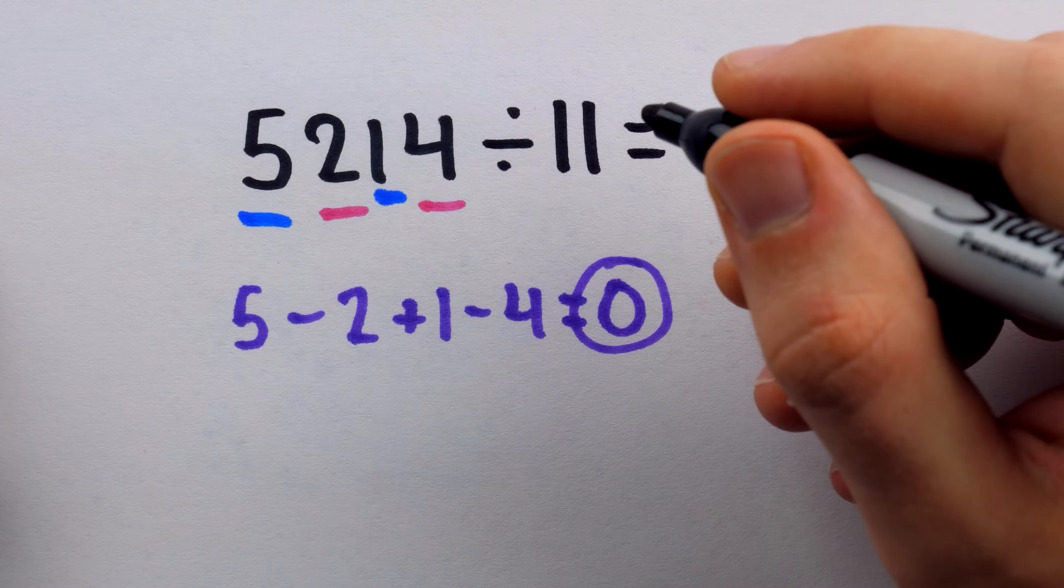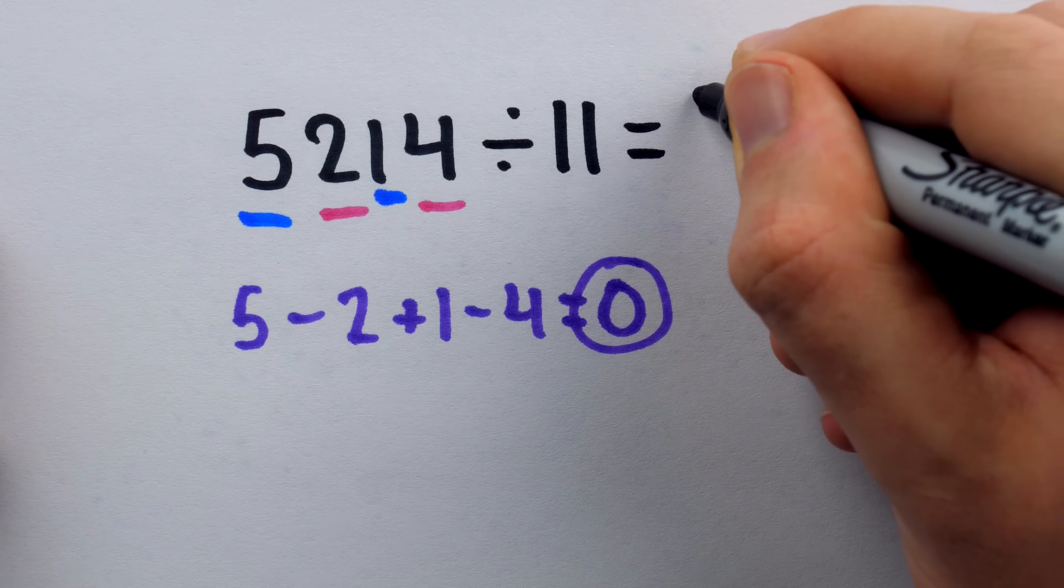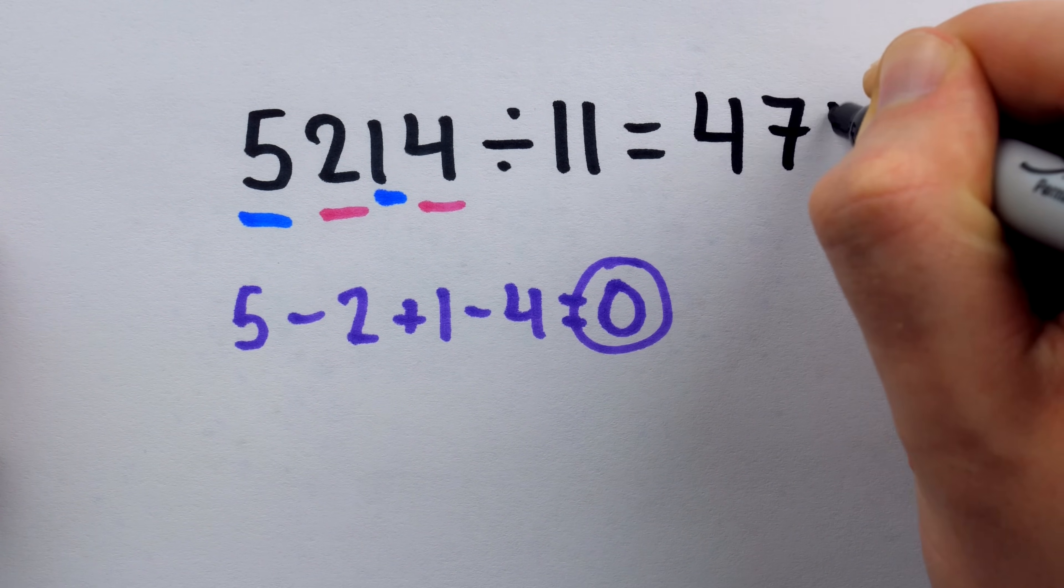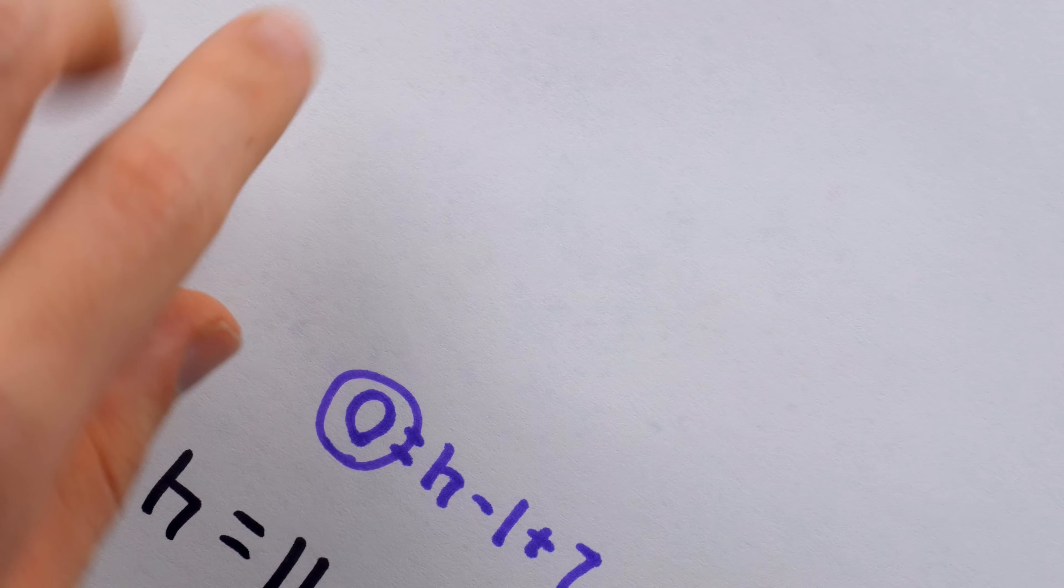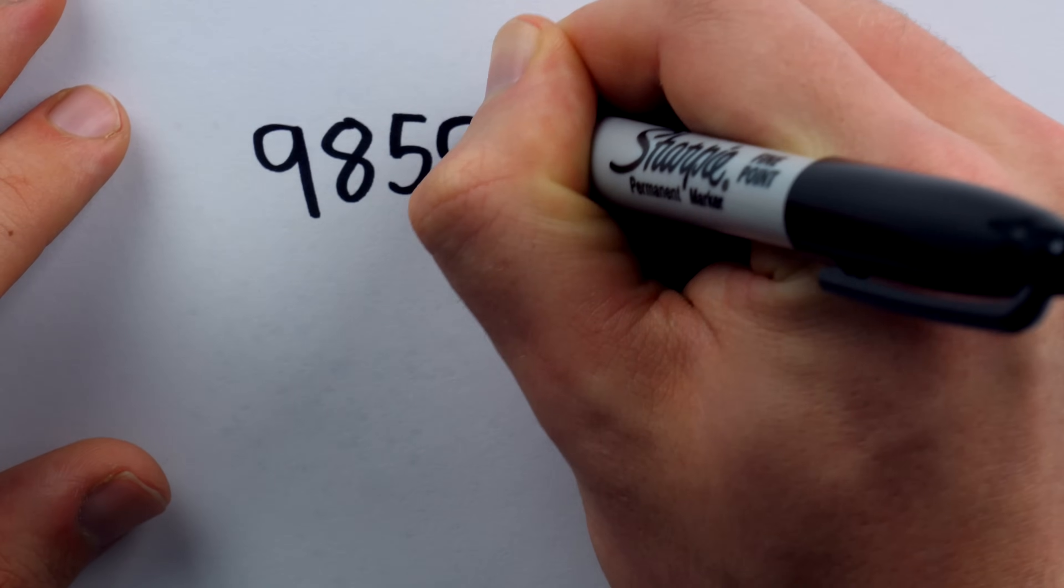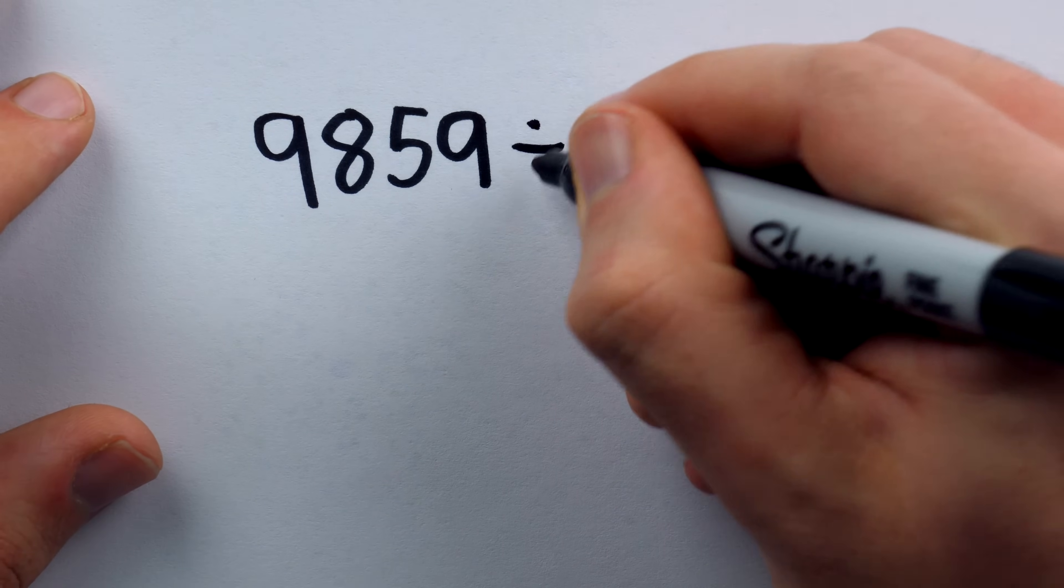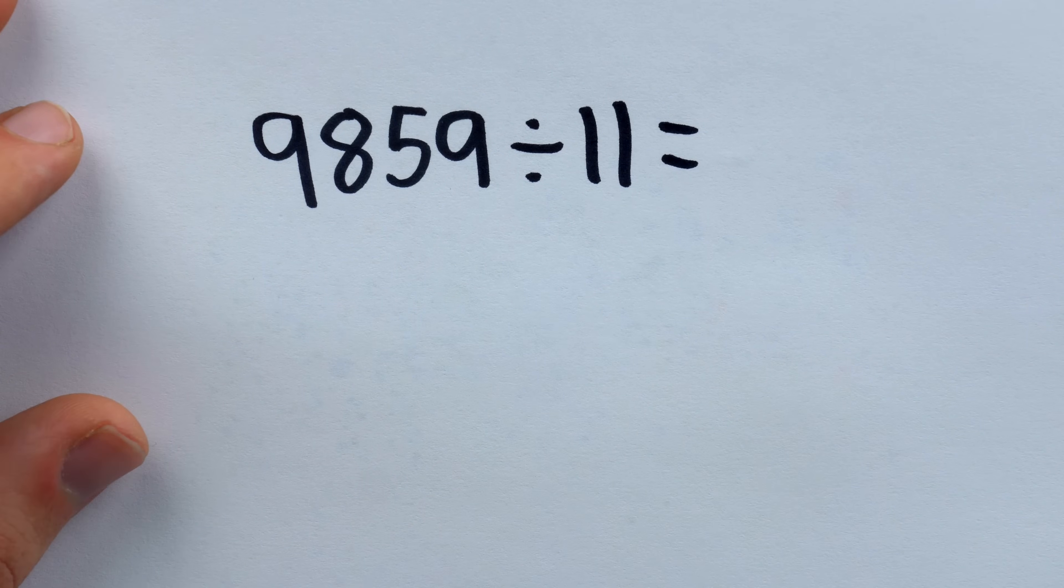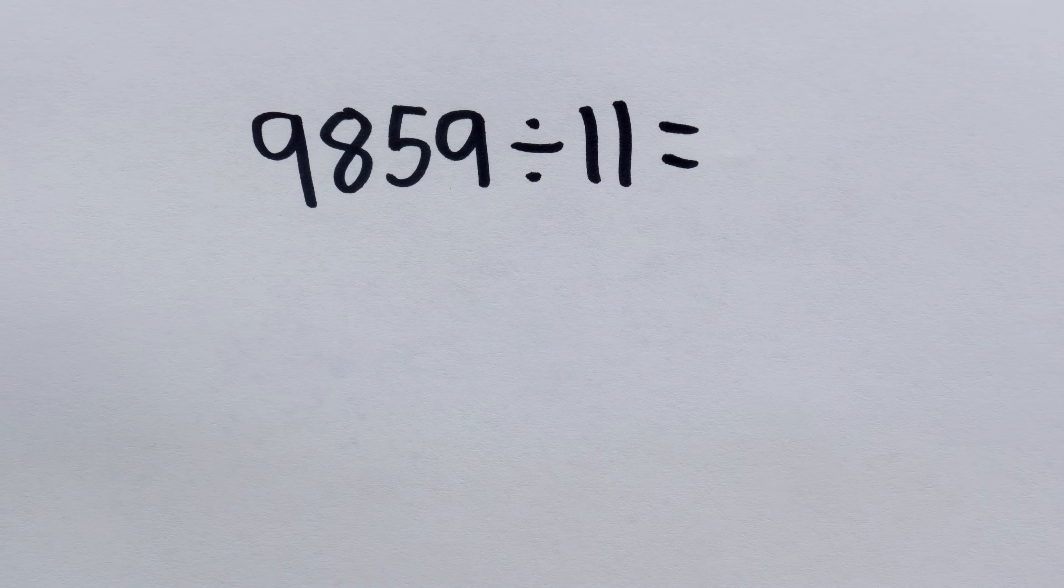It turns out that 5,214 is in fact 474 times 11. Now here's one for you to try. 9,859. Is this divisible by 11 or not? If we divide it by 11, do we get a nice whole number? Use the test and see.